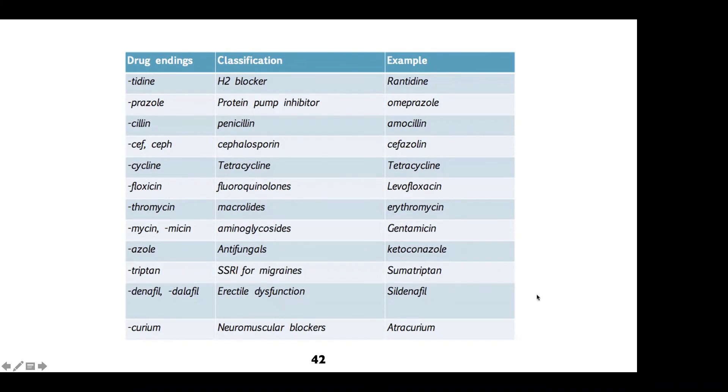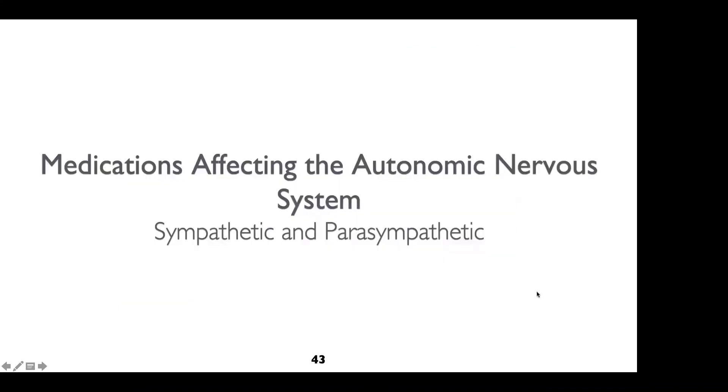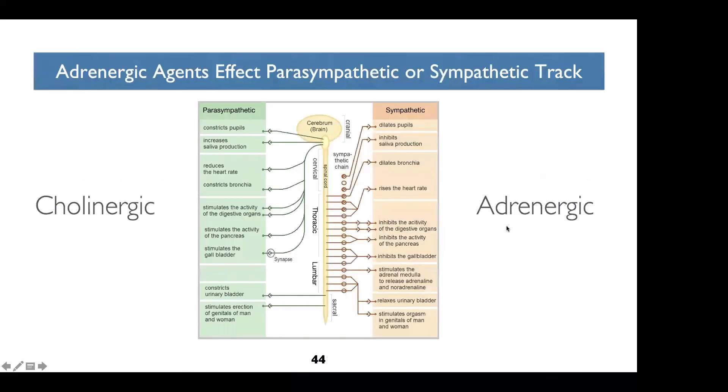So the root words do help you to relate it back to the class as a whole. First set of drugs we'll go over are those that affect the autonomic nervous system. So sympathetic and parasympathetic agents. Two systems that oppose each other, sympathetic and parasympathetic.